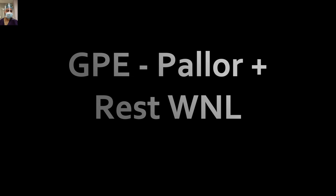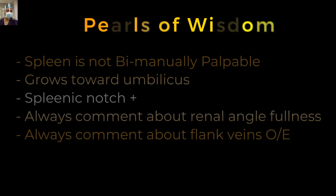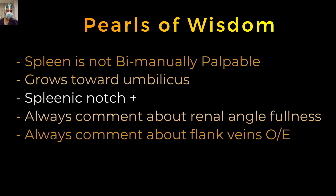General physical examination was normal except for pallor. On abdominal examination there was massive splenomegaly — the spleen reaching up to the umbilicus — and there was also a right-sided inguinal hernia. A splenic lump is not bimanually palpable, which differentiates it from a renal mass; it grows toward the umbilicus and you can feel the splenic notch. Always comment on renal angle fullness and flank veins on examination.